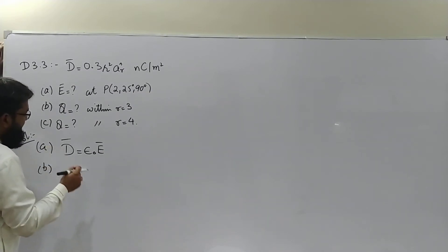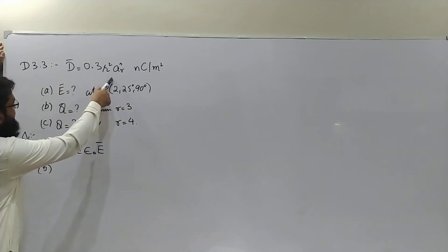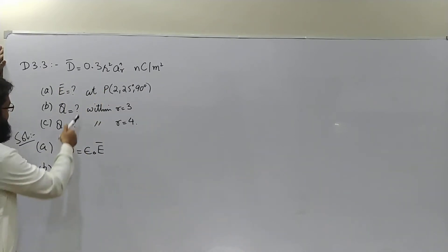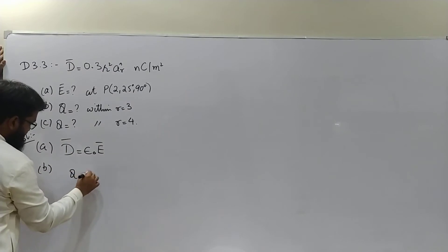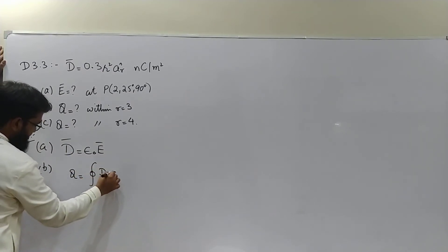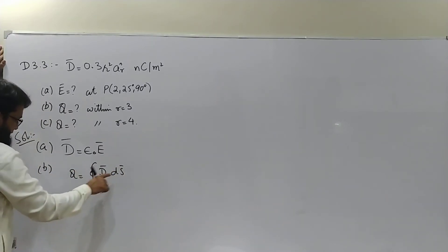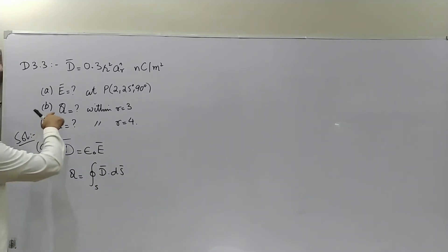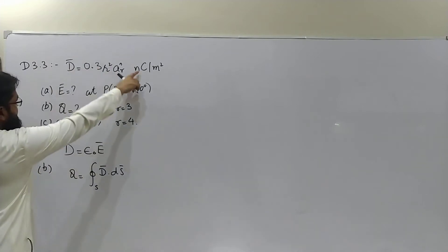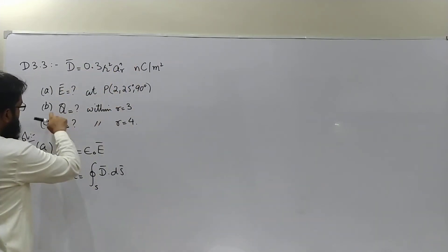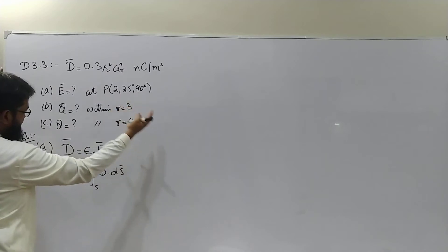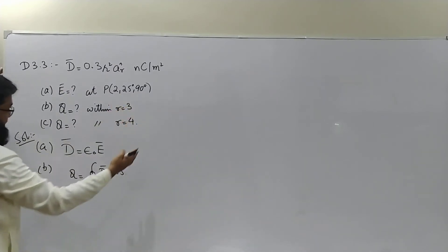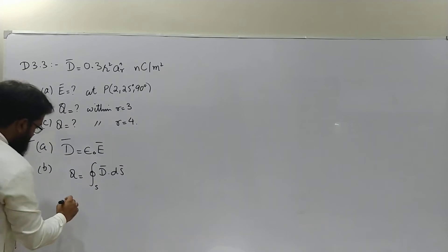Part B is not a difficult problem to apply Gauss's law. D has been given to us and we need the total charge. According to Gauss's law, closed loop integral of D dot ds gives us the total charge enclosed by this surface. The surface is given to us. We need to find the charge within R equals 3 sphere. R equals 3 is nothing but a sphere of radius 3.